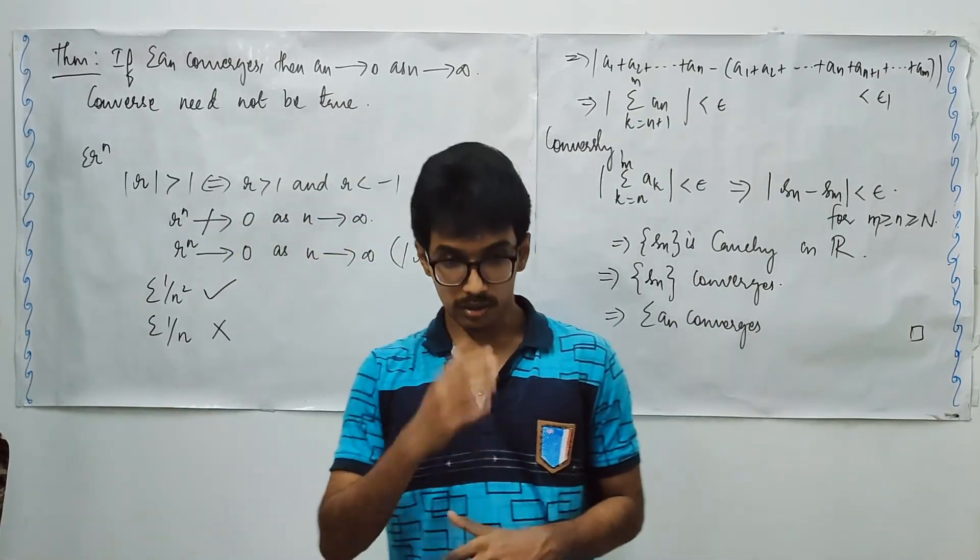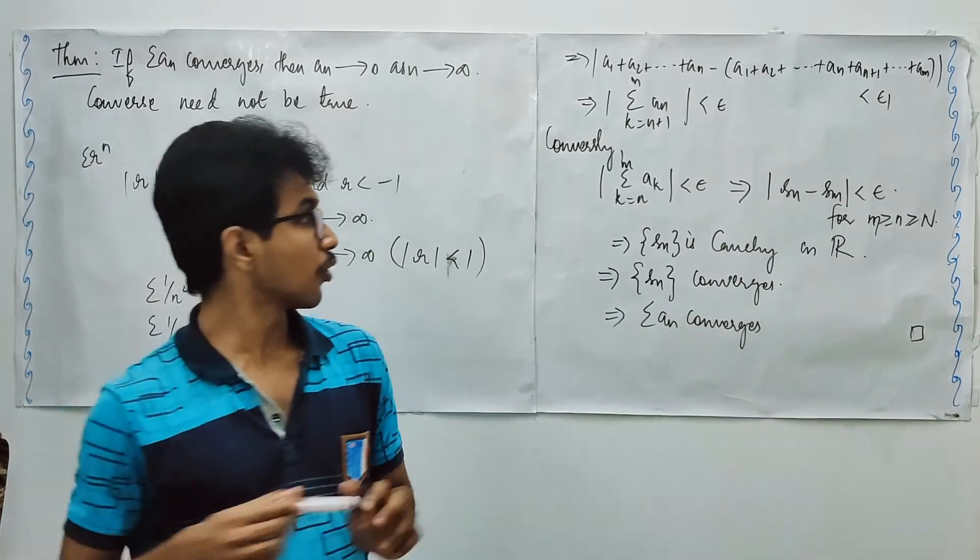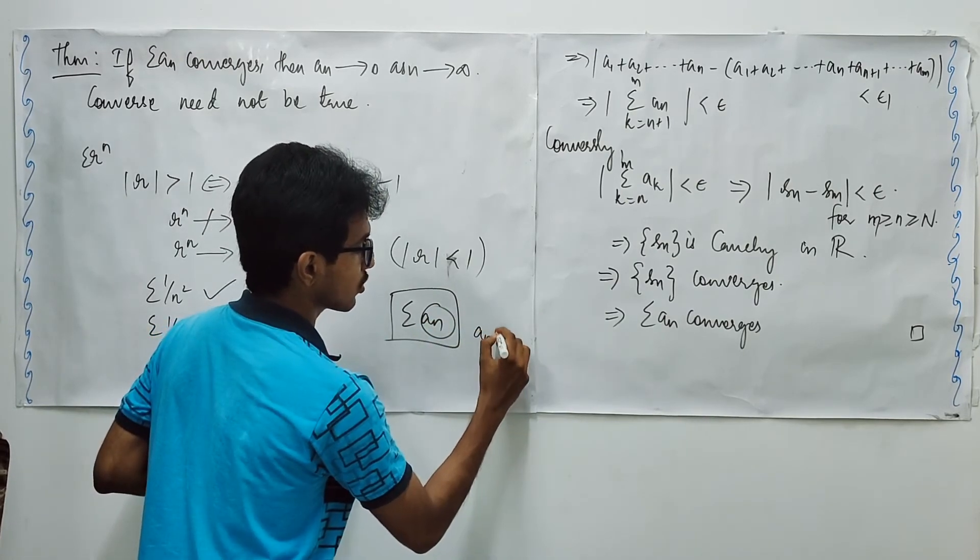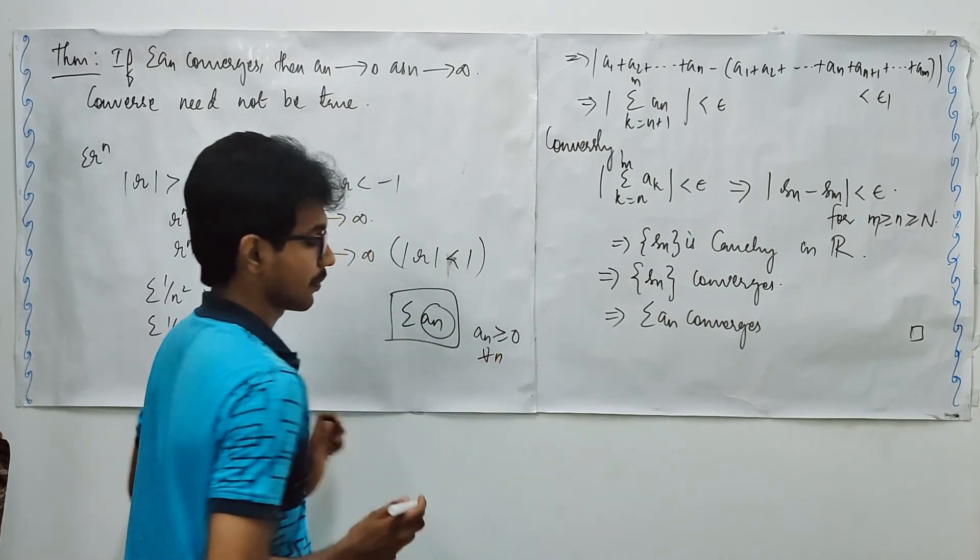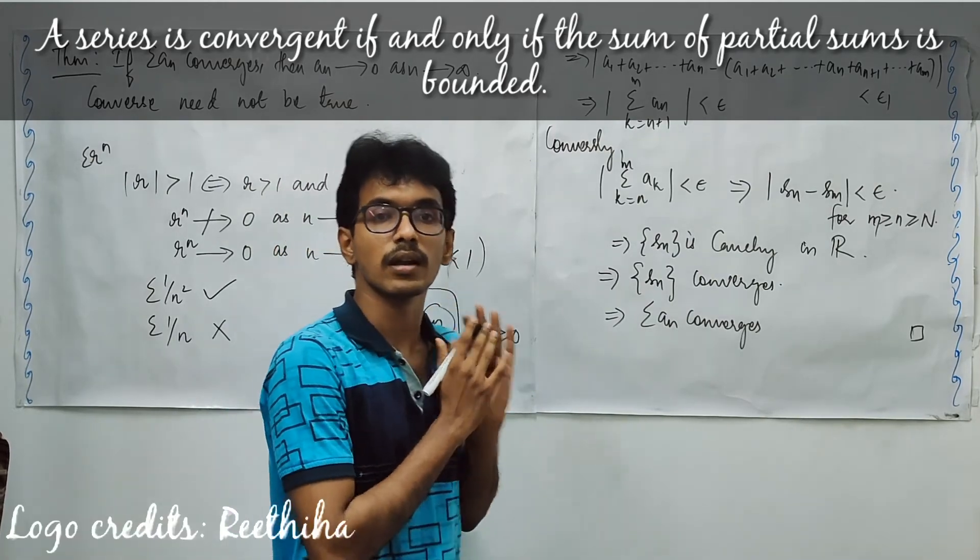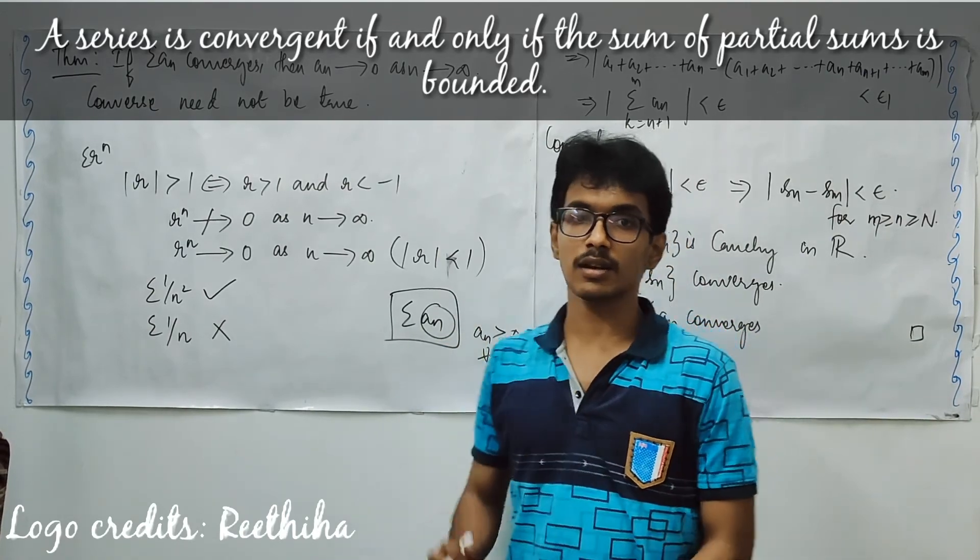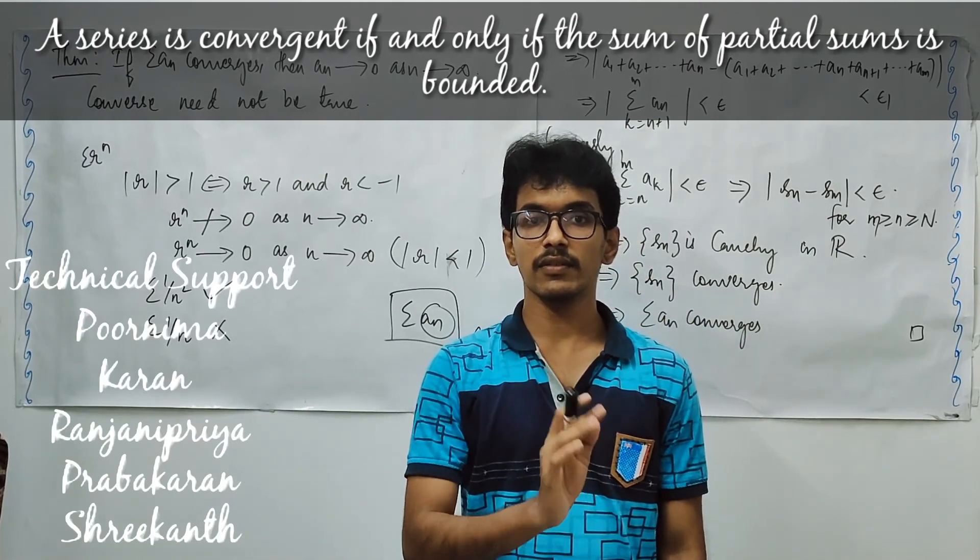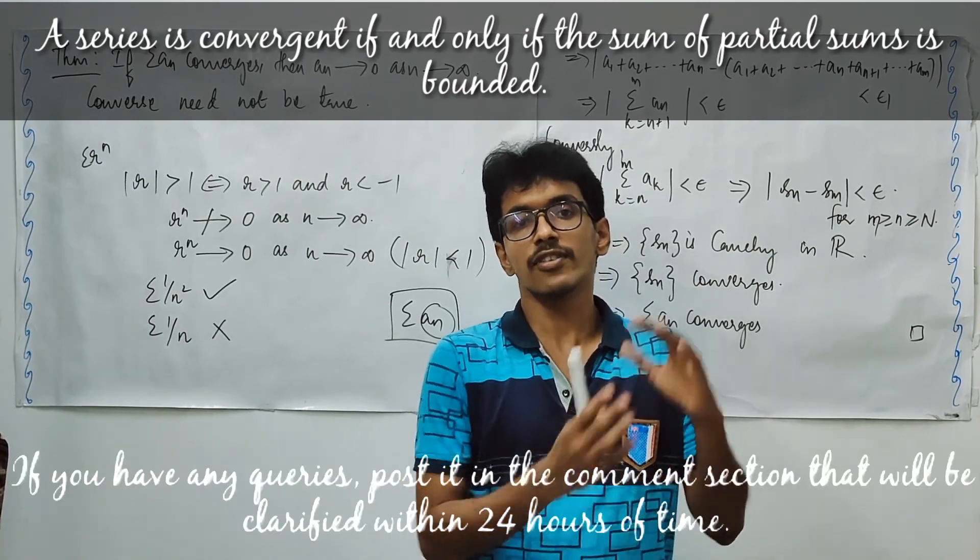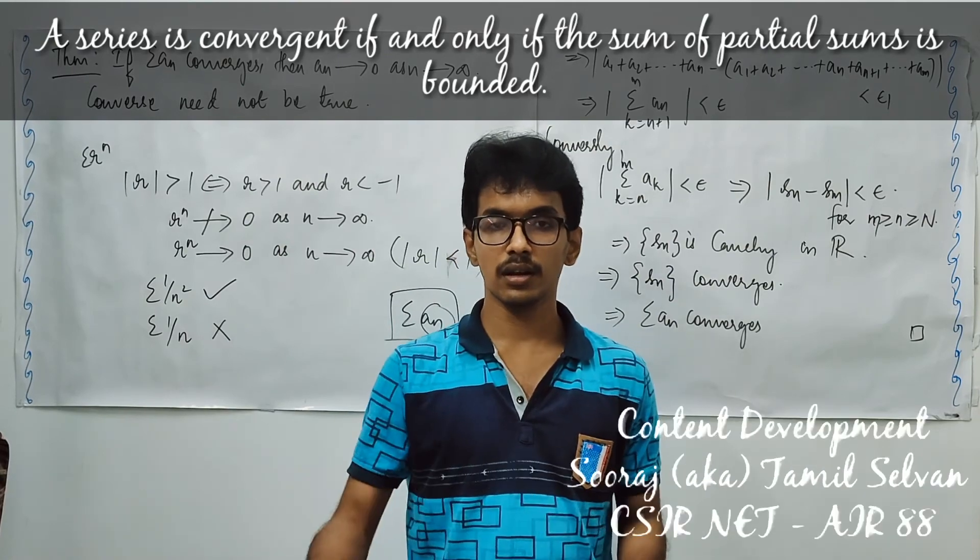And here, one more result that I would like to tell you is that a series of non-negative terms, which means if you are going to consider some series summation a_n of this form, all these a_n has to be greater than or equal to 0 for all n. If we are considering such series, this series is going to be a convergent one if and only if the sequence of partial sums is a bounded one. Generally, whenever a sequence is convergent, it is going to be bounded. So here, we do not need to check for convergence even, if we check it is bounded, it is enough to say that the series is convergent. Thank you for watching.